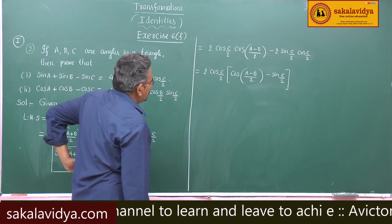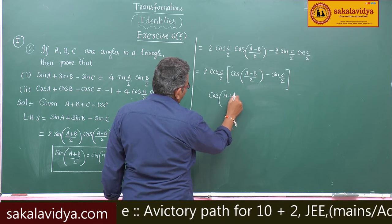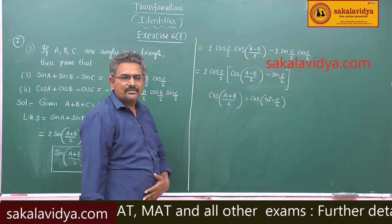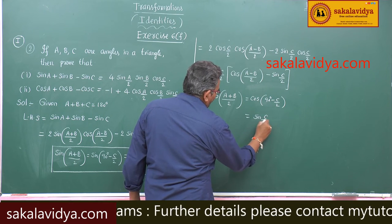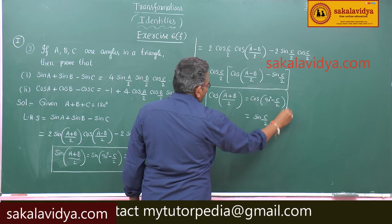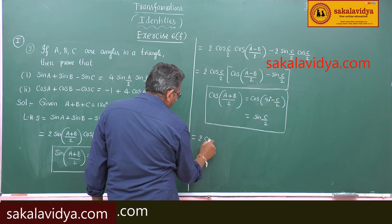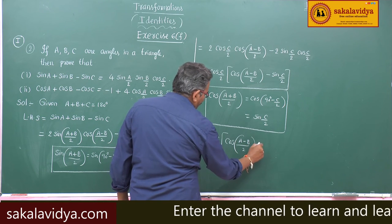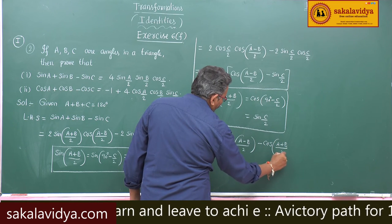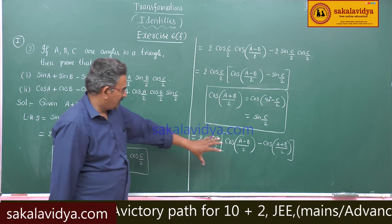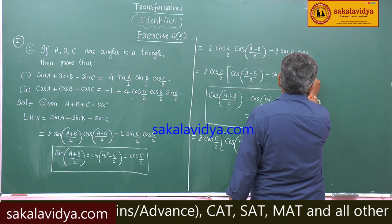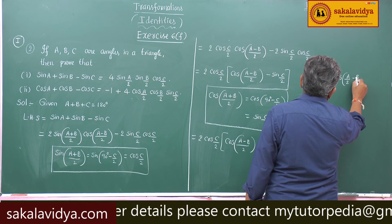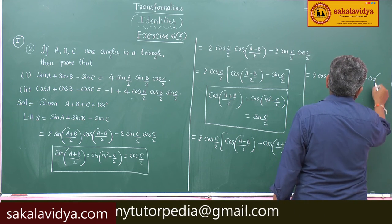We need to change sin(C/2). Note that cos((A+B)/2) equals cos(90 minus C/2) equals sin(C/2). So sin(C/2) is replaced by cos((A+B)/2). This gives 2 cos(C/2) into cos((A-B)/2) minus cos((A+B)/2), which can be written as 2 cos(C/2) into cos(A/2 - B/2) minus cos(A/2 + B/2).